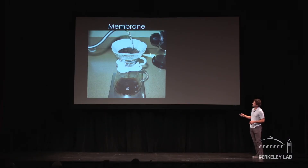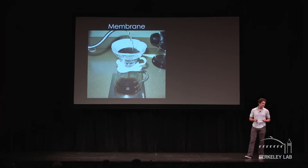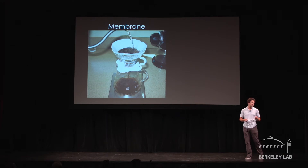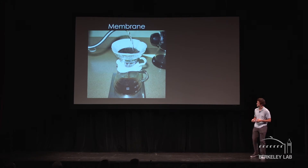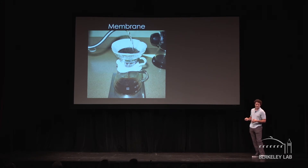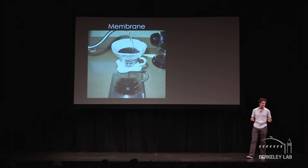The idea here is that we have pore sizes, or gaps, or openings in our membranes of just the size that we can separate out what we'd really like to make use of — coffee, obviously in this case — and leave behind everything else that we're not really interested in.